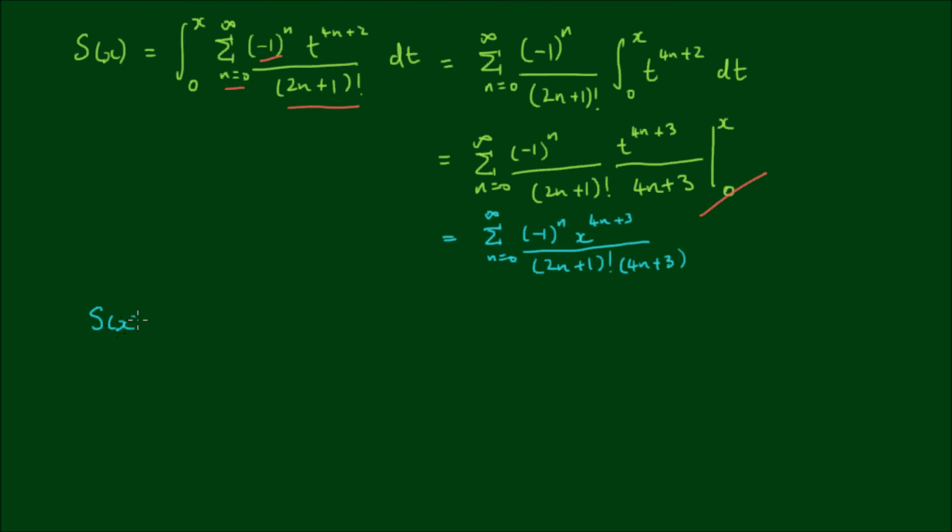Alright, so the first few terms of this series is x³/3, minus x⁷/(3!×7), plus x¹¹/(5!×11), minus x¹⁵/(7!×15), plus x¹⁹/(9!×19) plus so on.